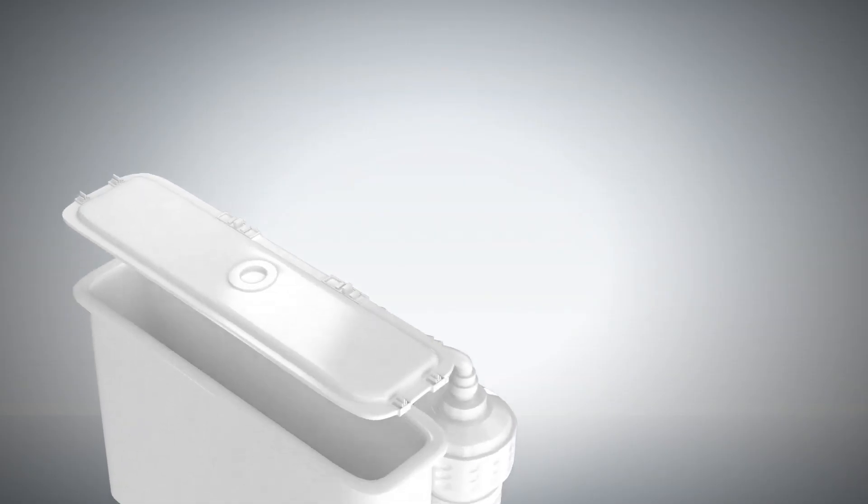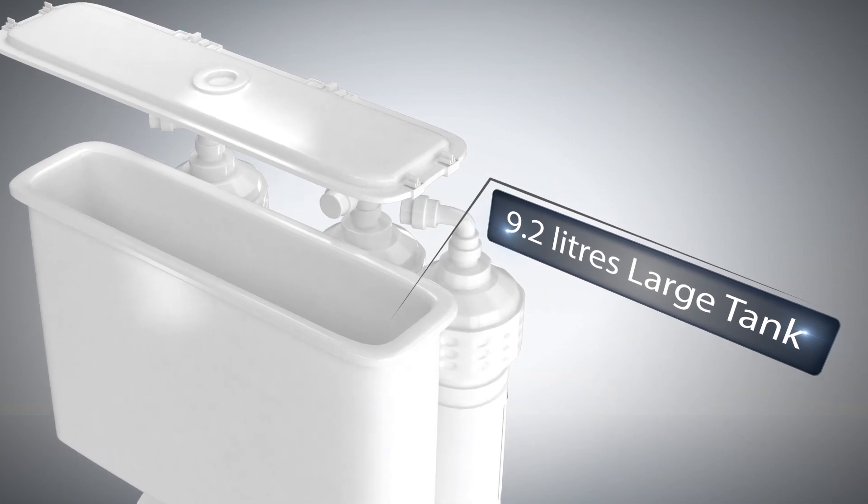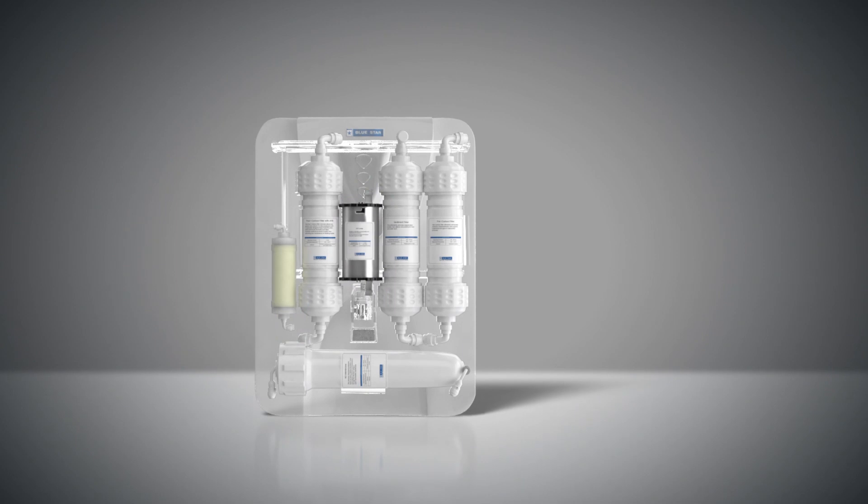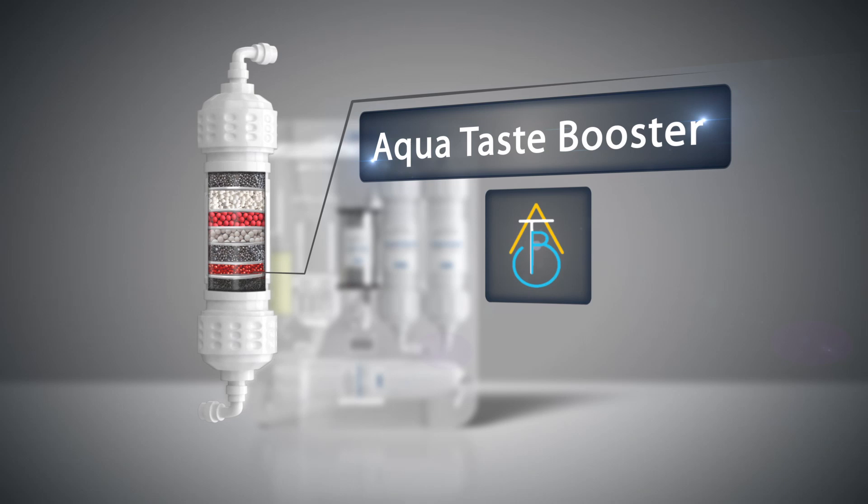The entire Imperia range has a 9.2 liter large storage tank and comes with an aquataste booster which uses calcite media to maintain the optimum pH level of water, enhancing the taste.